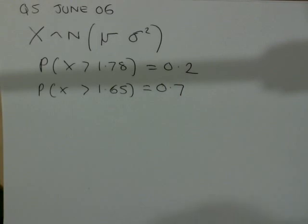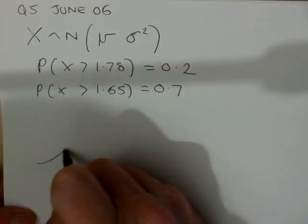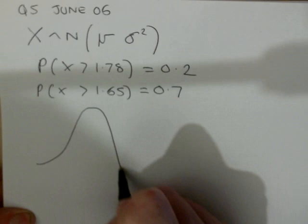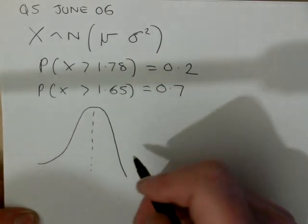The probability that they can clear 1.78 meters is 0.2, and the probability that they're more than 1.65 is 0.7. I'm asked to represent this information in a diagram. So, we'll sketch out the normal distribution.